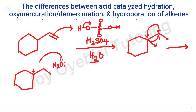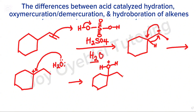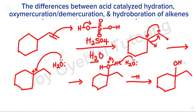After rearrangement, the carbocation moves over and the hydrogen has gone to that side. The next step is H2O attacking the carbon with the carbocation. You have OH2 with a positive sign, and now we're going to be deprotonating one of the hydrogens. You can use another molecule of water or any base in the system to deprotonate, and that gives you your major product. Acid-catalyzed hydration tends to rearrange the carbocation to get the most stable carbocation if possible.